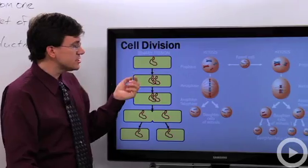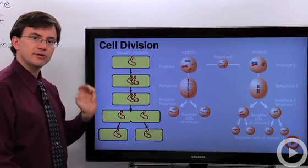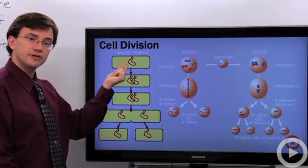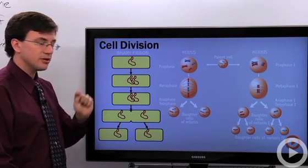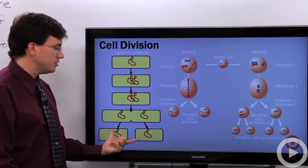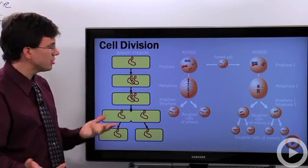If we take a quick look at this, you can see just by looking at them, the three processes are different. Binary fission, you start off with a single cell that has one molecule of DNA, you copy it, and then you divide it into the two new daughter cells. Pretty quick and easy.